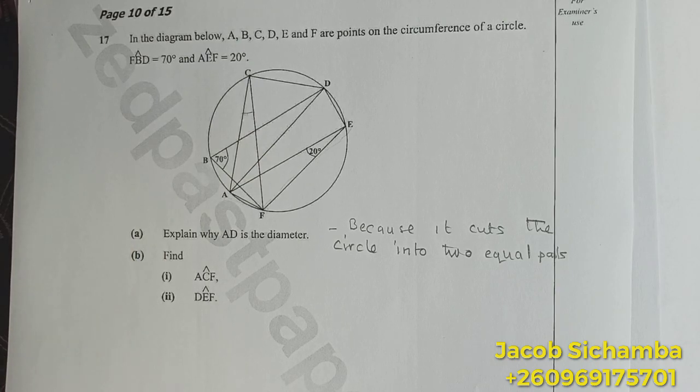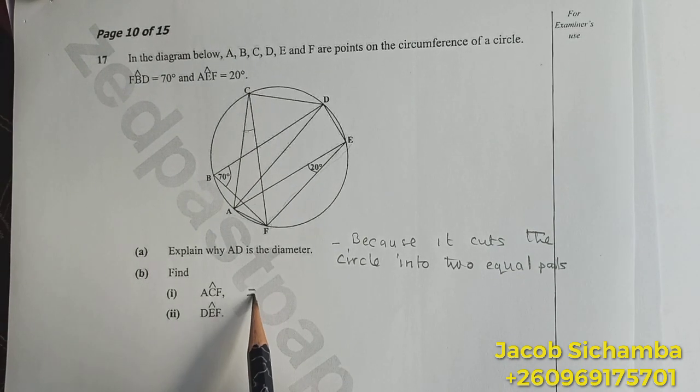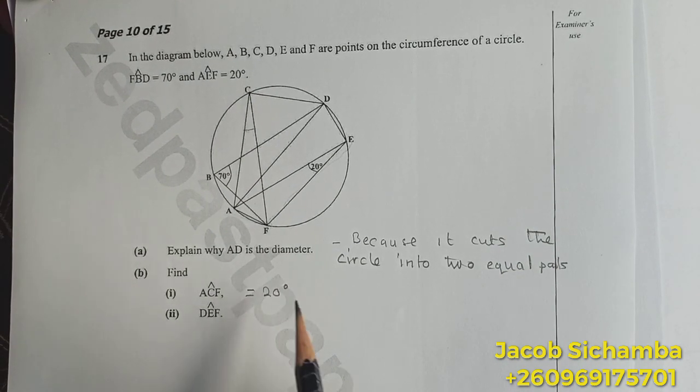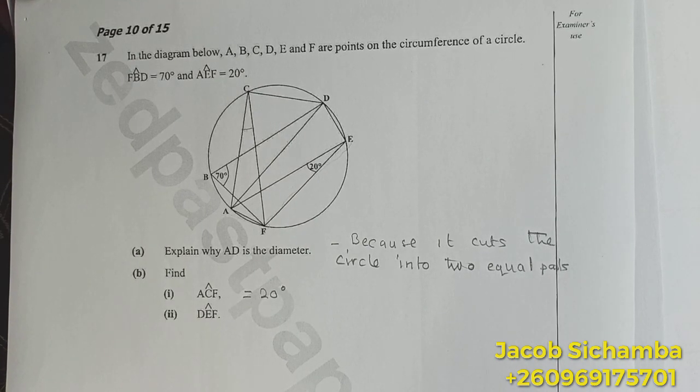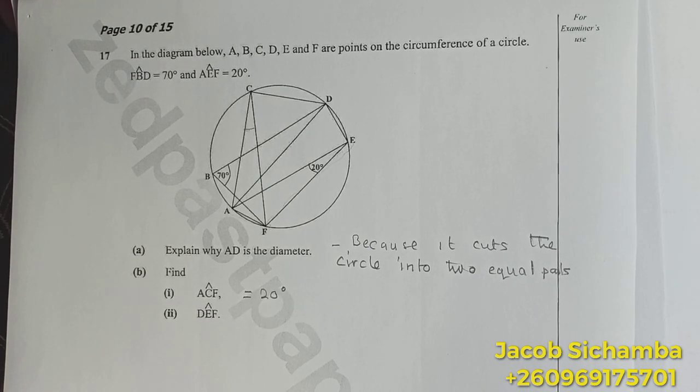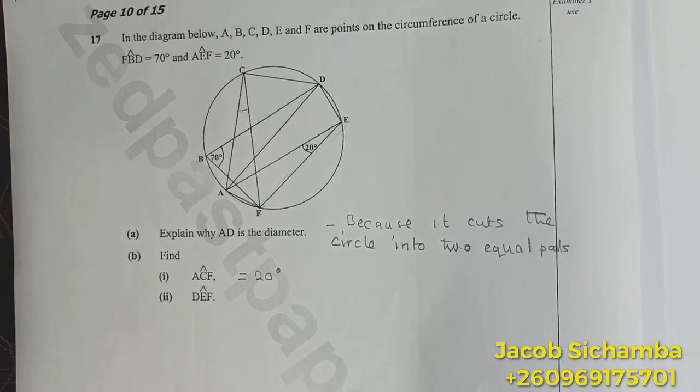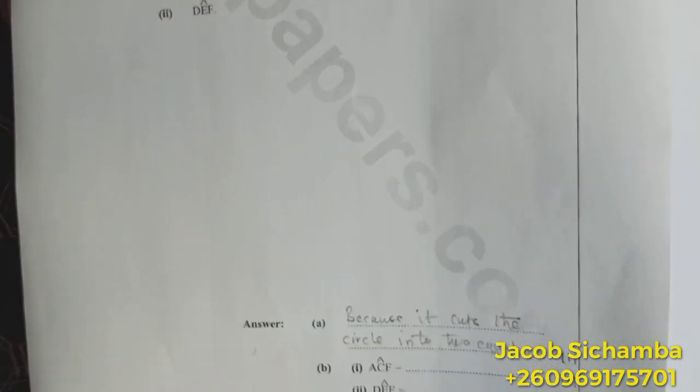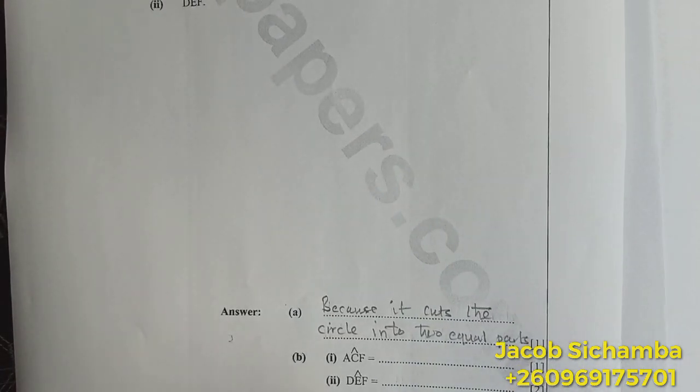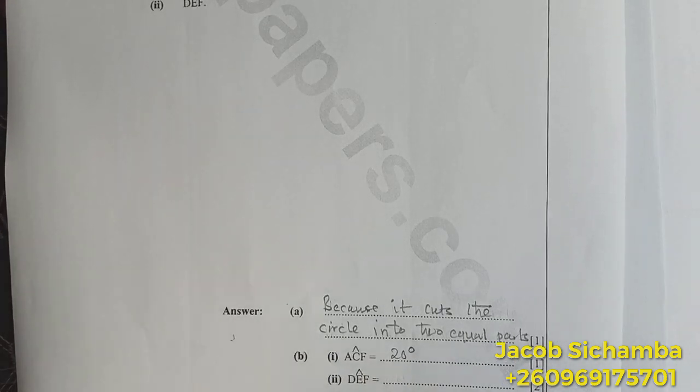Meaning the angle which is here is the same as the angle which will be right here. This is 20 degrees. There is no need of calculations. It's just 20 degrees straight forward.